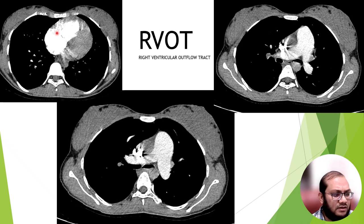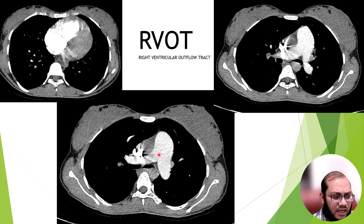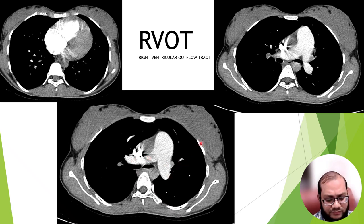Here we can see on the CT axial images: blood from the superior and inferior vena cava enters into the right atrium, and from the right atrium it goes into the right ventricle. The main pulmonary artery arises from the right ventricle and divides into a longer right pulmonary artery and a shorter left pulmonary artery. The ductus arteriosus in adults becomes fibrous and is called the ligamentum arteriosum.